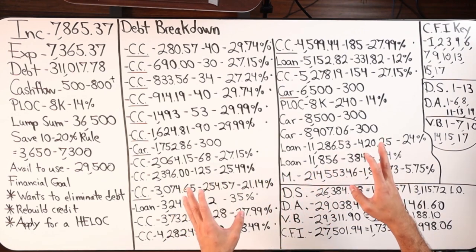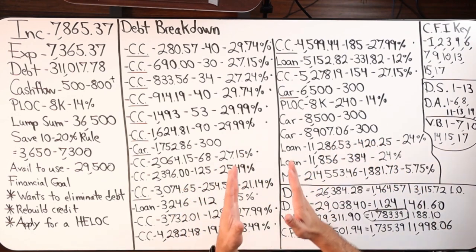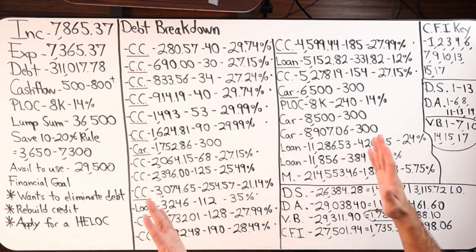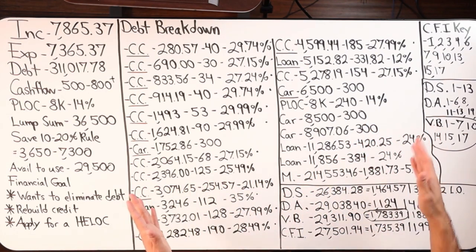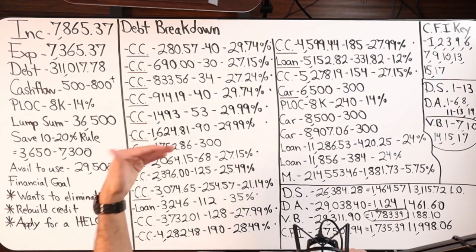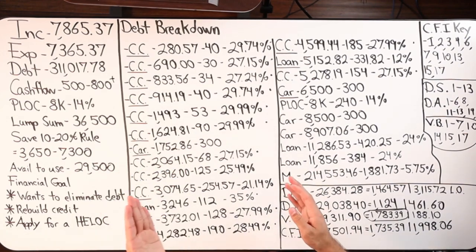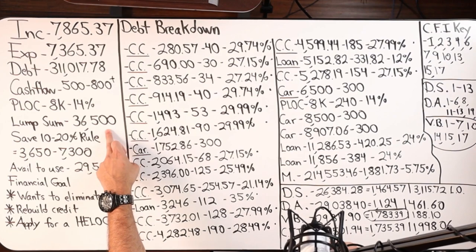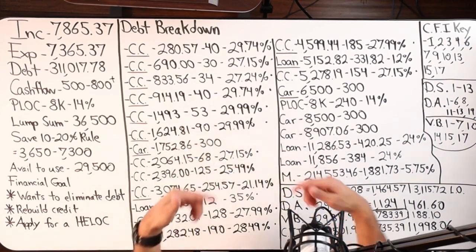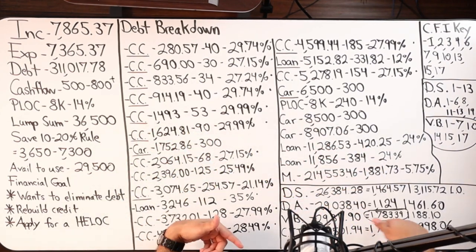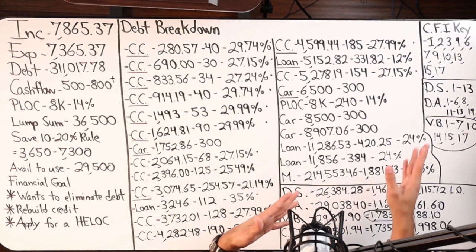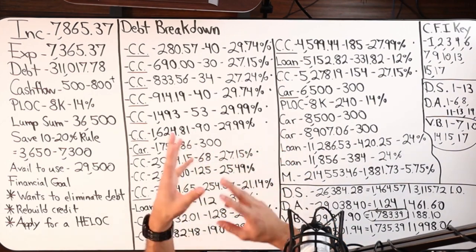Once we eliminate a certain number of debts, I'll do an updated video. I'm recording this in February 2023 — the client is receiving the money in February 2023. They'll pay off the debts using velocity banking and the cash flow index formula. I'll do an update video showing where we're at and what's happened.